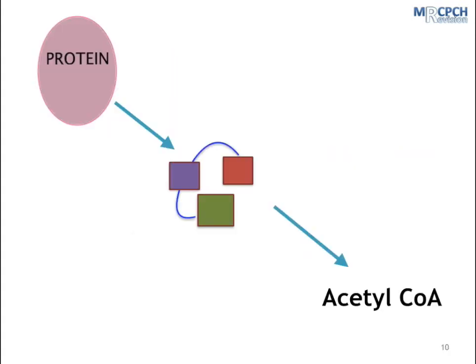Proteins undergo a similar process. So when proteins are broken down, they form amino acids. Now these are formed of an amino group and a carbon skeleton. The carbon skeleton also produces acetyl coenzyme A, as well as pyruvates and ketones. So both of these, acetyl coenzyme A and the pyruvates, contribute to the Krebs cycle in cells.